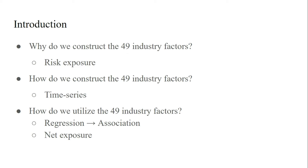We will then regress each stock in our portfolio on the 49 industry factors to calculate the association between each stock and the 49 industries. From that regression we get a coefficient for each of the 49 industries. For example, if we had 10 stocks in our portfolio and wanted to understand our exposure to the chemical industry, we would regress each of our 10 stocks on the chemical industry, getting 10 betas.